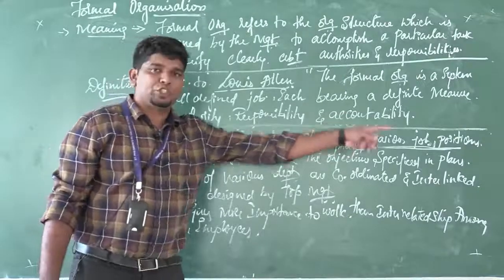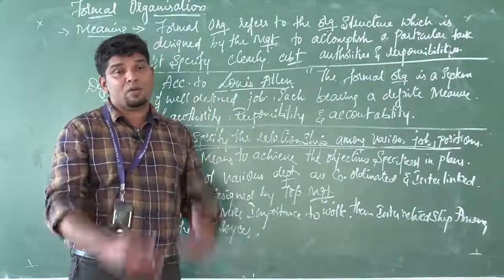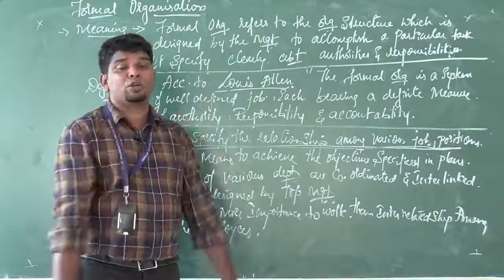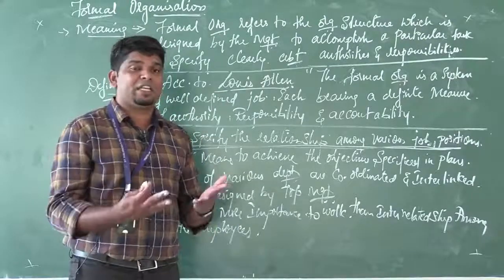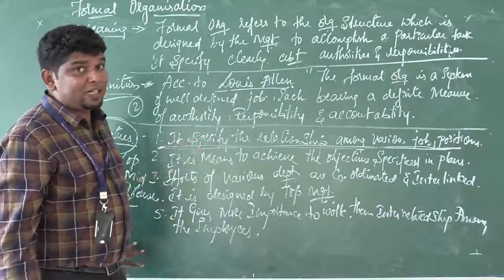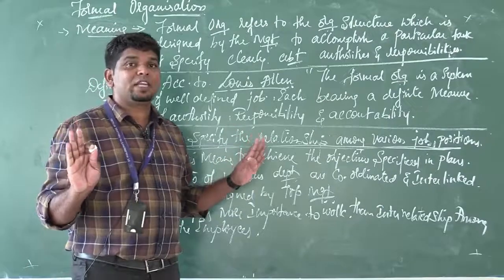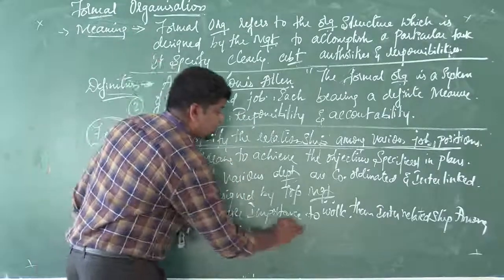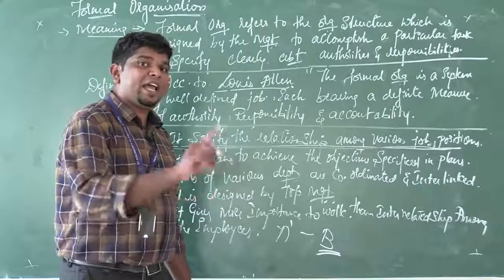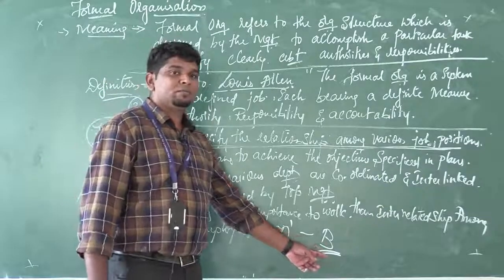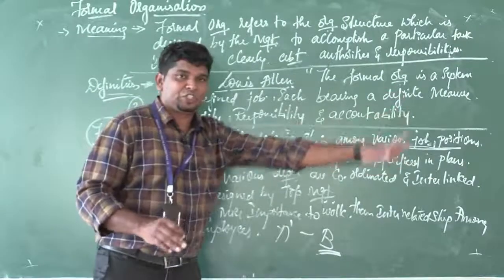As an employee, whatever work I do — to whom am I responsible, to whom do I report, to whom do I give the message? In the formal organization, all these things have a clear-cut message. For example, Mr. A has to report to Mr. B — a clear-cut message. This is formal organization: it specifies the relationship among various job positions.